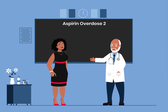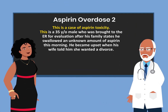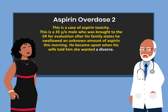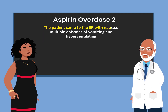Today we want to talk about the case of aspirin toxicity. This is a 35-year-old male who was brought to the ER for evaluation after his family states he swallowed an unknown amount of aspirin this morning. He became upset when his wife told him she wanted a divorce. The patient came to the ER with nausea, multiple episodes of vomiting, and hyperventilating.